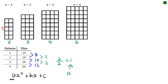The side of shape 2 is 6, shape 3 is 7, and shape 4 is 8. Now if I just draw the nth pattern at the end, we try and figure out a formula for this.